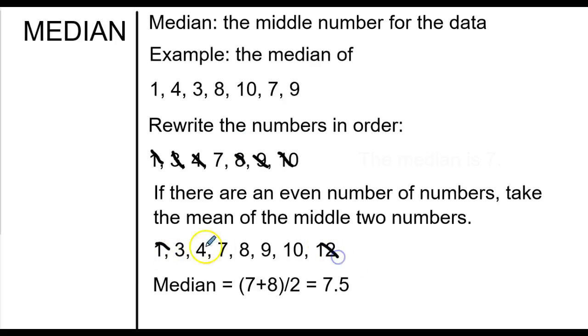In this case though, if you cross those off, you get down to 7 and 8, so you would need to add those up and get 7.5. In this case up above, the median is 7. For this one, it's 7.5. It depends on the number of numbers you have in your data set.